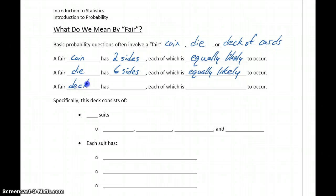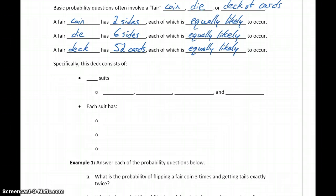And then we have a fair deck of cards which has 52 total cards, and again each of these is equally likely to occur. Now the deck of cards is a little more complicated because within those 52 cards we have some breakdowns, different types of cards.